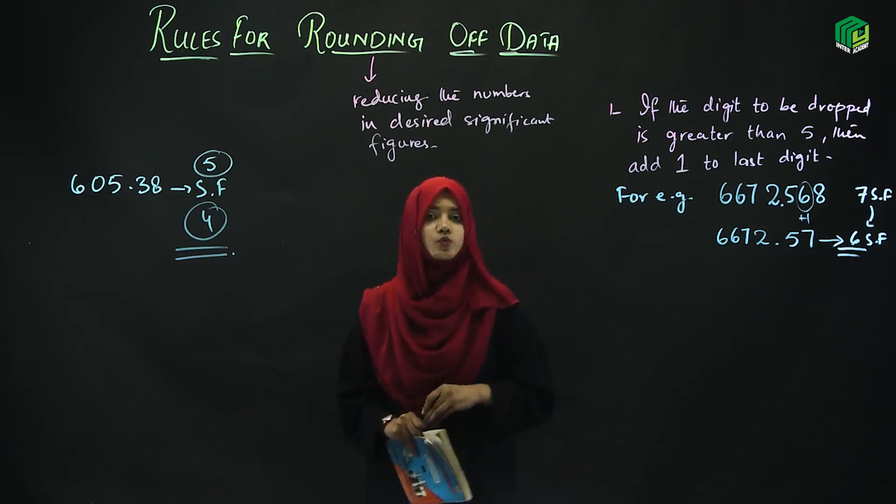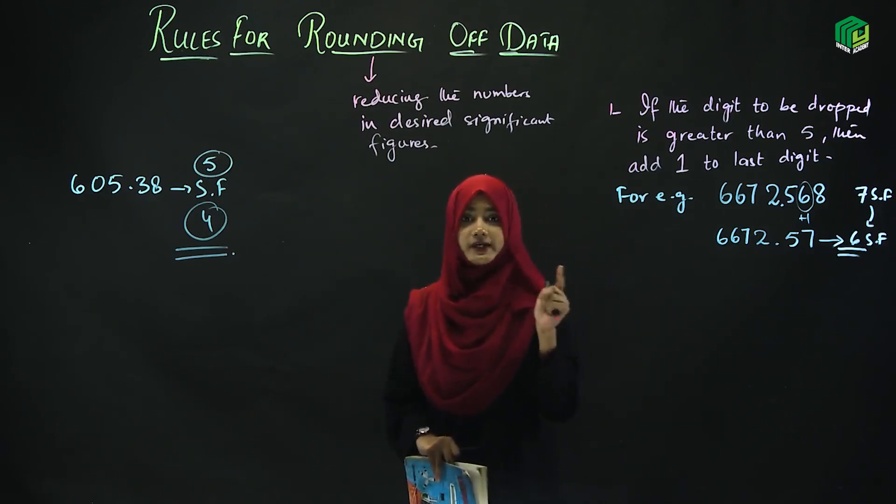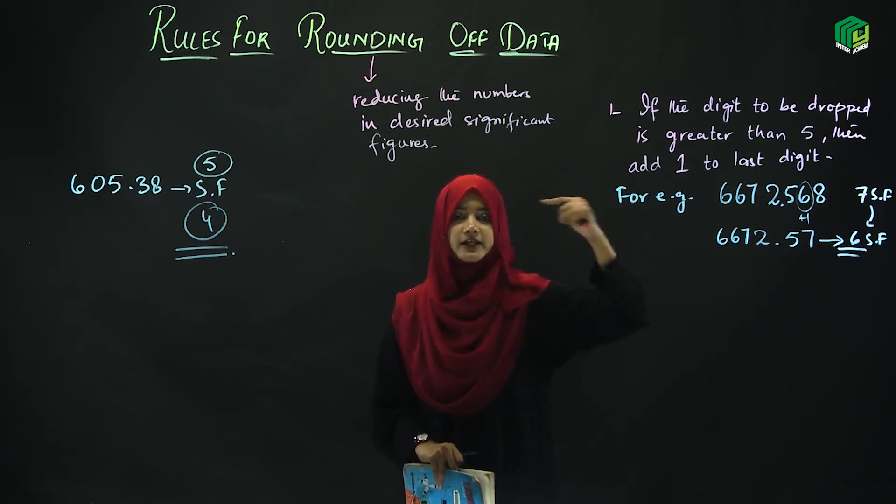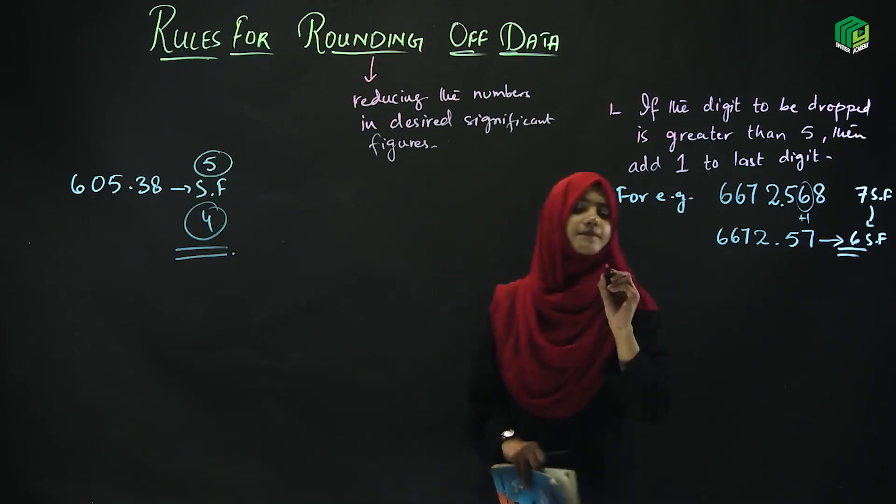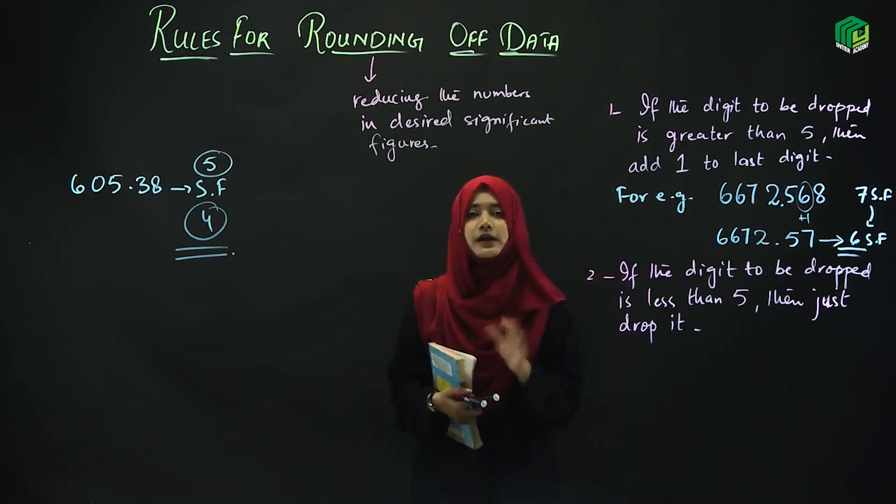Now rule number 2. First we talked about rule number 1, we talked about greater than 5. Now let's talk about less than 5.